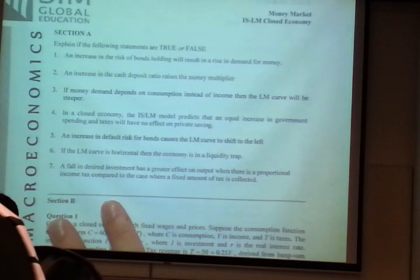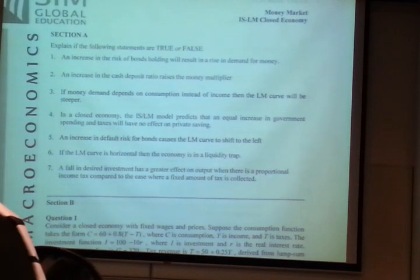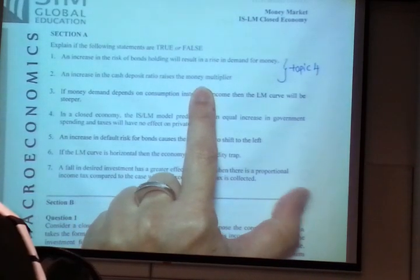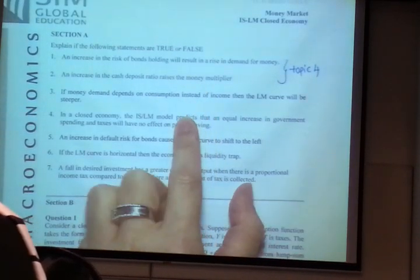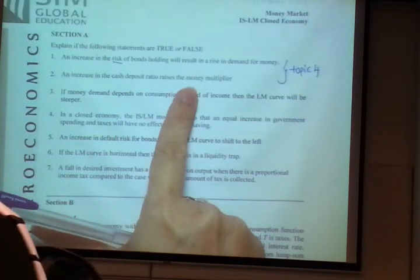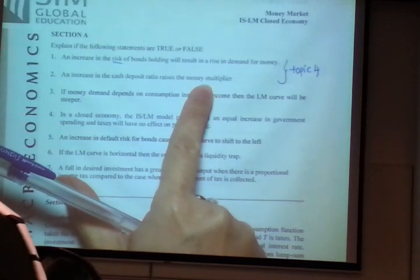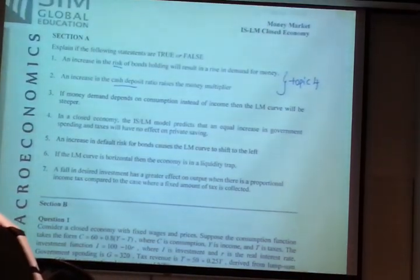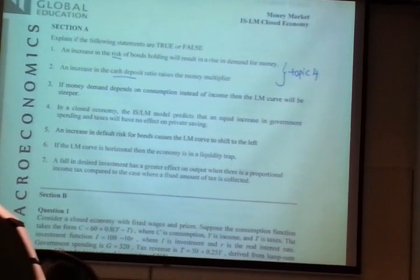If you look at the questions here: Question 1 is on money demand, Question 2 is money supply. So this is topic 4. There are not many questions on topic 4. The standard question is always money demand, and they love to test risk. Then for question 2, they love to test money multiplier, and their favourite is cash deposit, because students make a lot of mistakes. So that covers only topic 4.